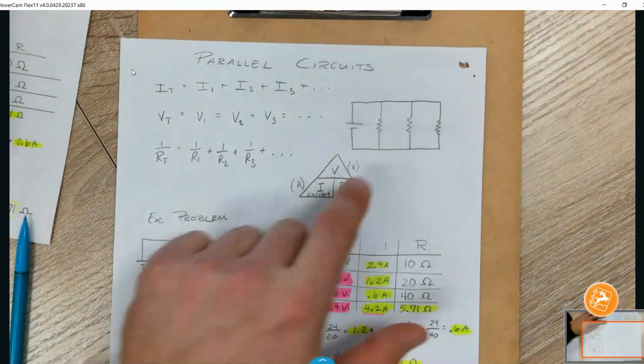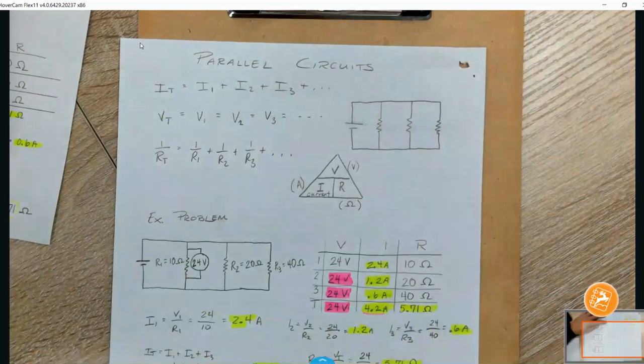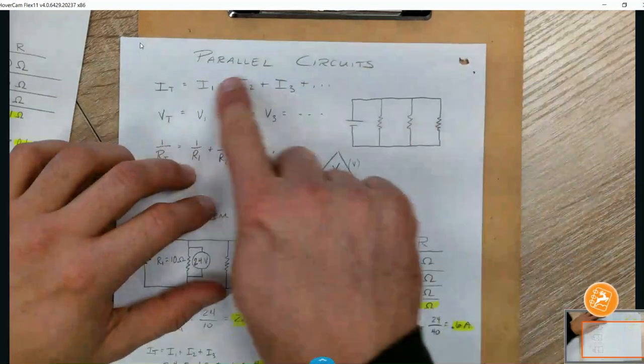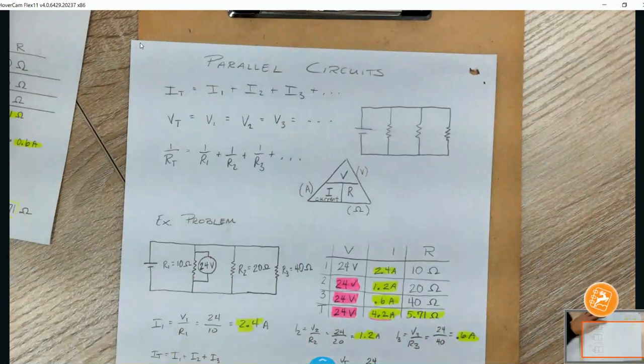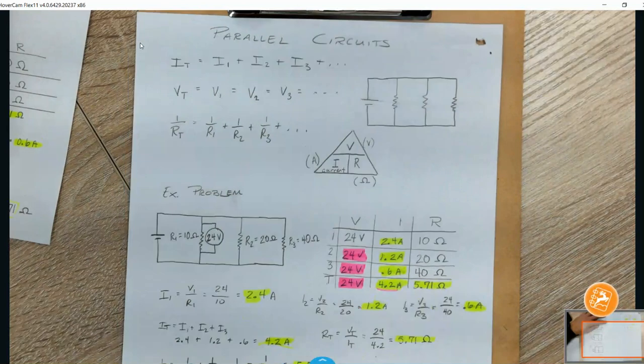Current is not going to be the same in each because they all have their own little path. So, they can be different. But if you add them all up, all right. Oh, snap. While I have it here, I do want to just show this.